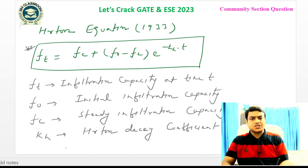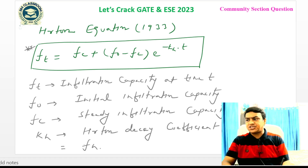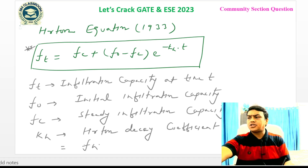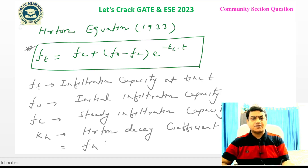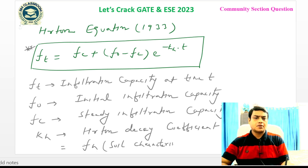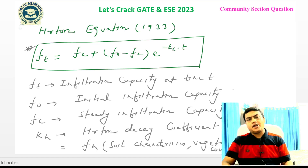Kh is a function of soil characteristics and vegetation cover. So the Horton decay coefficient depends on the soil characteristics and the vegetation cover of the area.